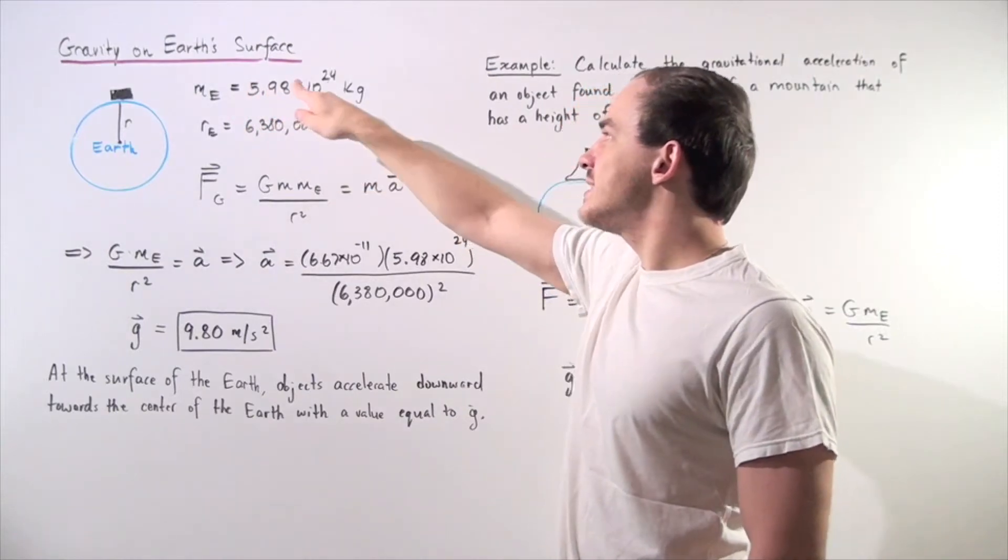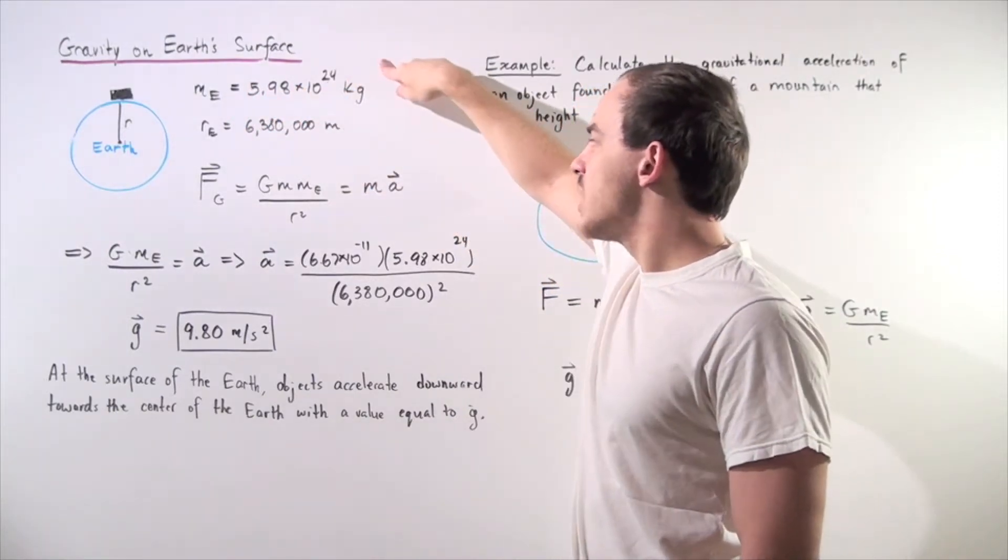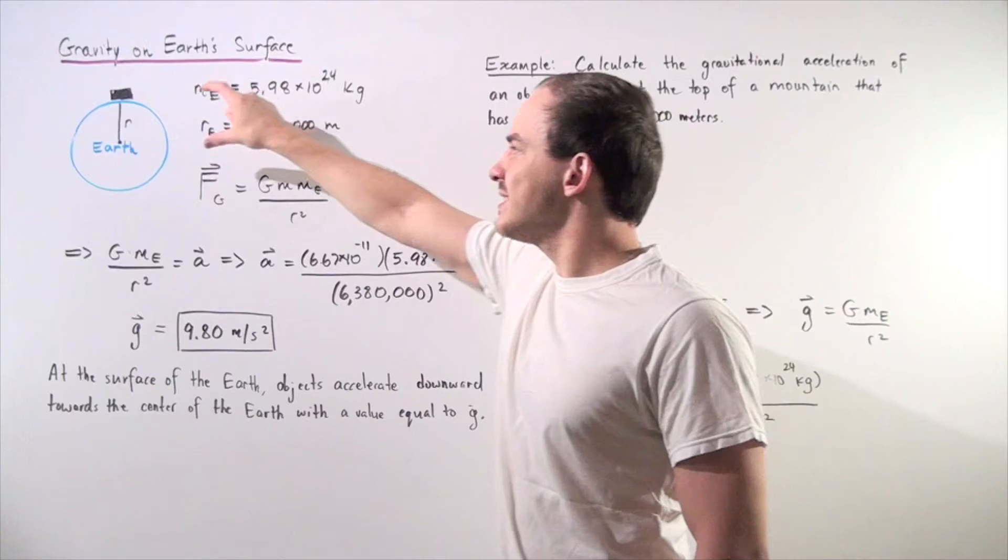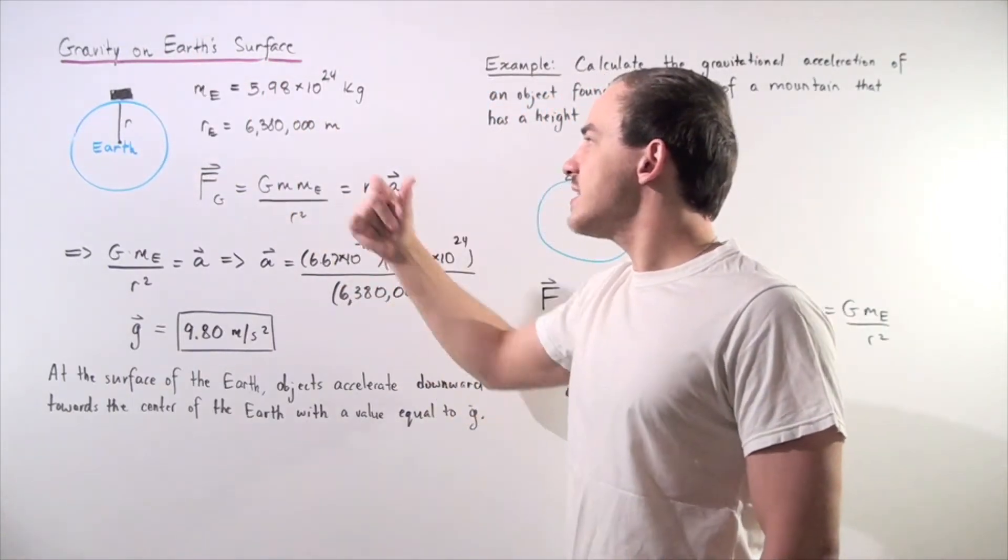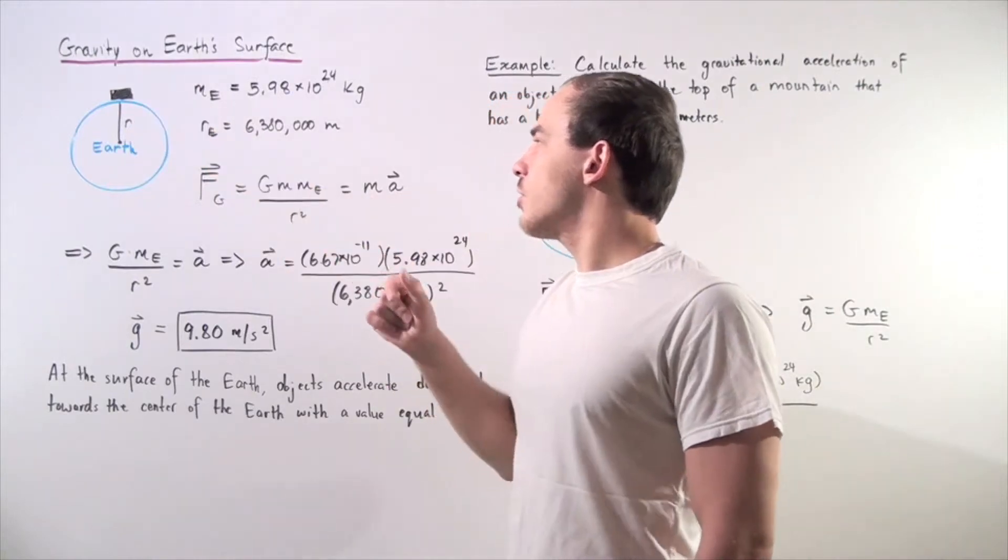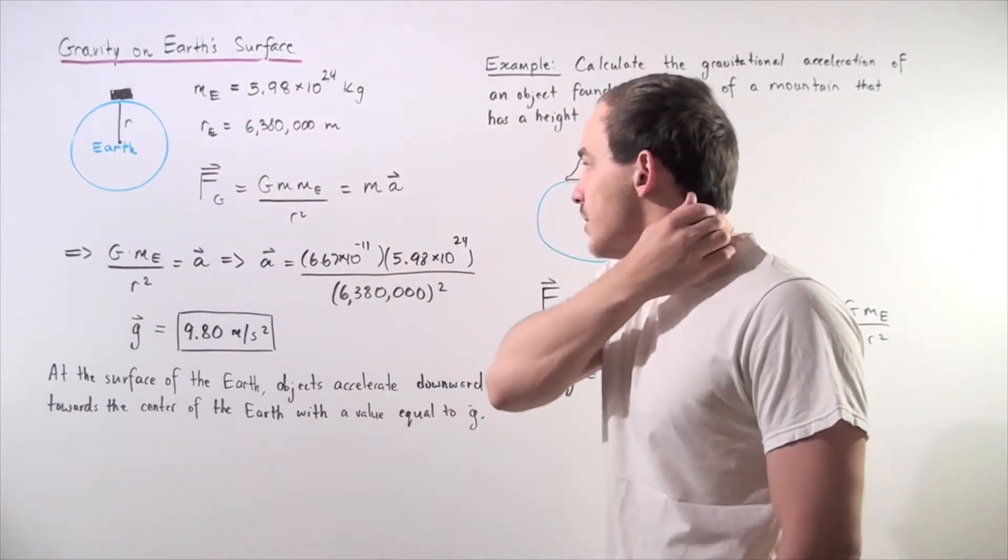which is 5.98 times 10 to 24 kilograms, divided by the distance between the center of mass squared, which in this case is the radius of the Earth, 6,380,000 meters.